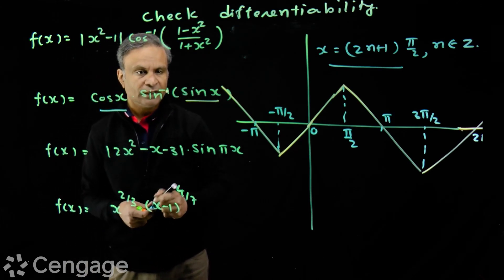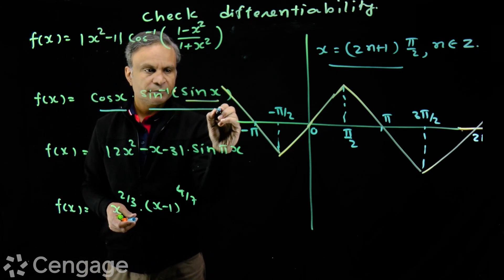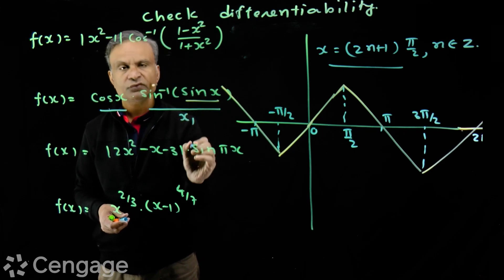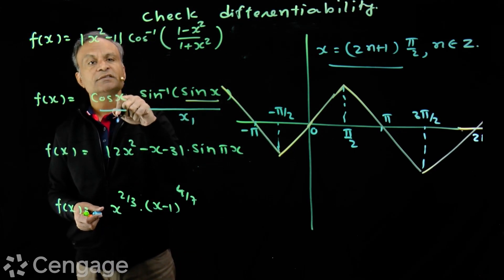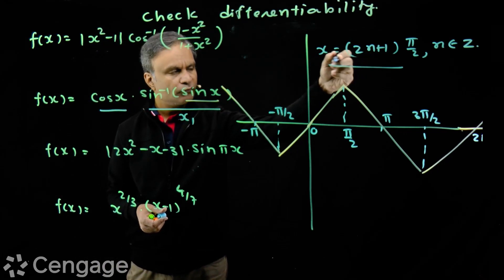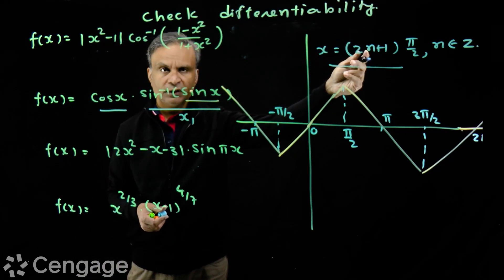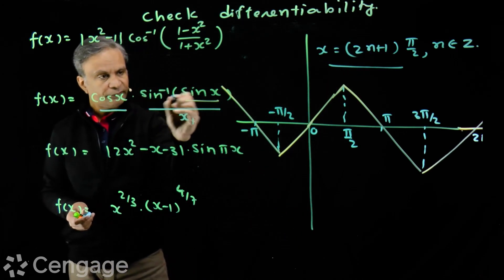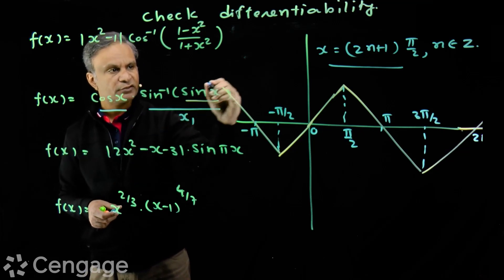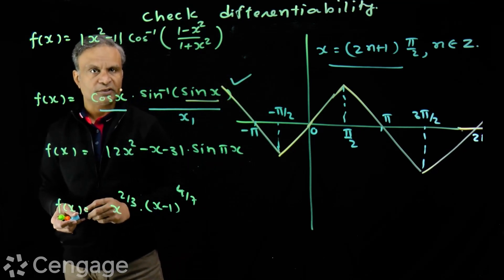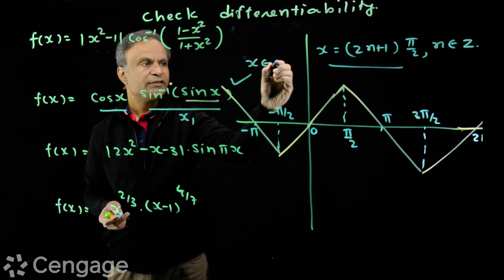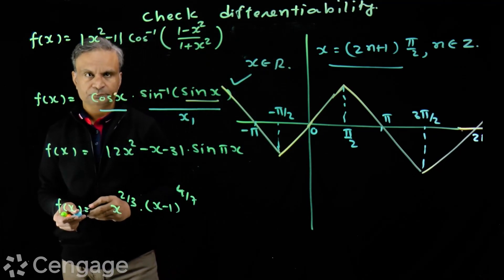Now, sin⁻¹(sin x) is non-differentiable at some point x₁ — one of the values (2n+1)·π/2 — but at those points cos(x) equals zero. So wherever this factor function is non-differentiable, the other factor cos(x) vanishes. Therefore this product function f(x) is differentiable for all x ∈ ℝ.